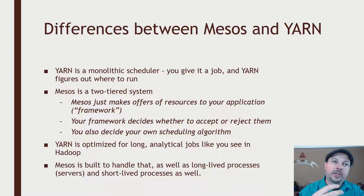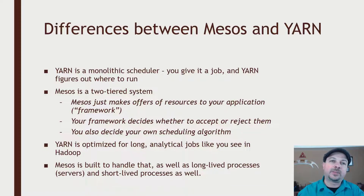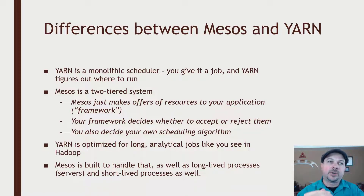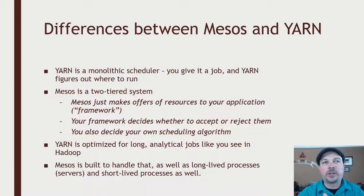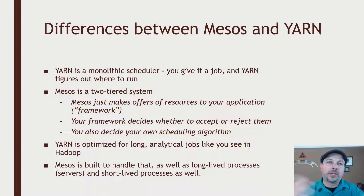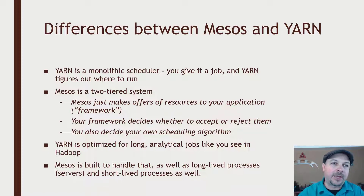It's up to the person writing a framework to decide whether to accept or reject that offer of resources from Mesos, and you also specify whatever scheduling algorithm that you want. So it's a two-tiered system, and it turns out this scales a little bit better. It's what companies like Google and Twitter actually use when dealing with massive computing resources and a massive amount of different kinds of jobs running at different lifetimes.